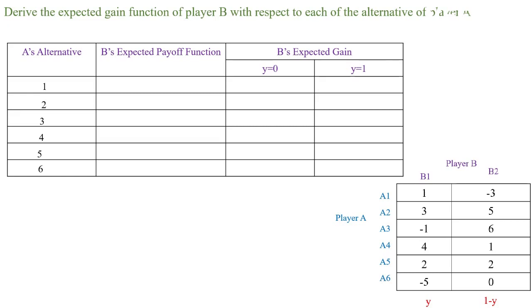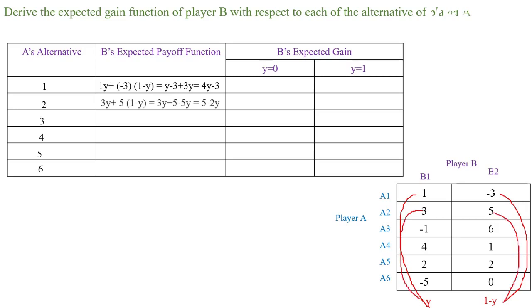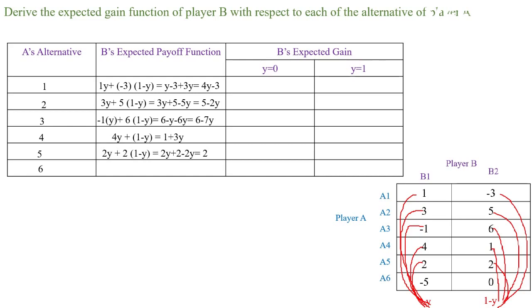For A1, which has values 1 and -3, the expected payoff function is: 1·y + (−3)·(1−y). For A2, it is 3·y + 5·(1−y). For A3, it is (−1)·y + 6·(1−y). For A4, it is 4·y + 1·(1−y). For A5, it is 2·y + 2·(1−y). For A6, the expected payoff function is (−5)·y + 0·(1−y).